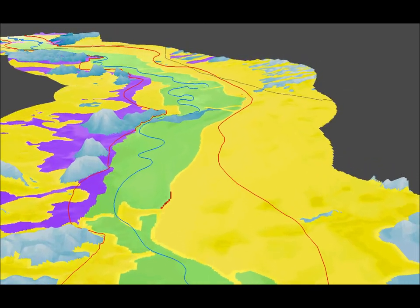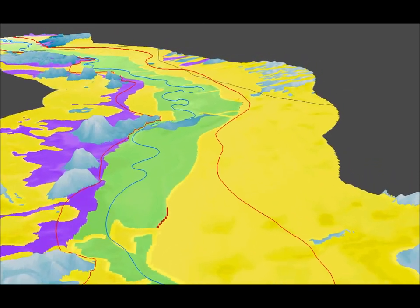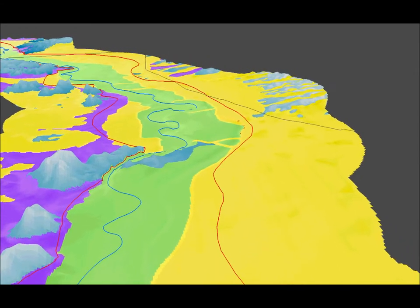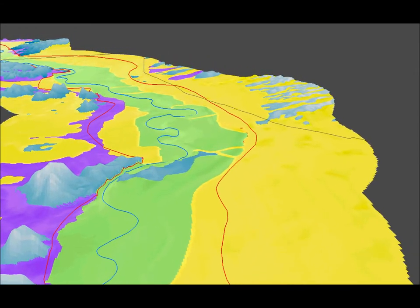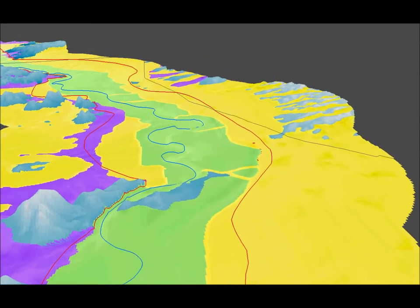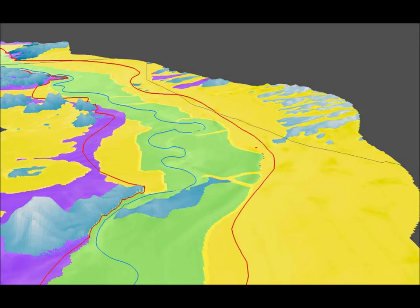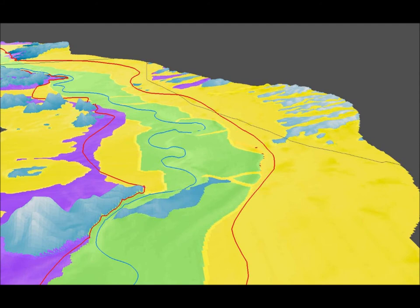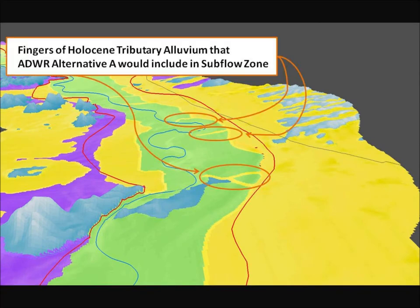It is not clear how ADWR would map the edge of the subflow zone in this area using Alternative B as proposed in their 2011 report. South of St. David, which is just off the upper right edge of the map, I have circled a large inlier of basin fill. East and north of the inlier toward St. David are small fingers of tributary Holocene alluvium that would be added to the subflow zone if ADWR Alternative A is adopted.